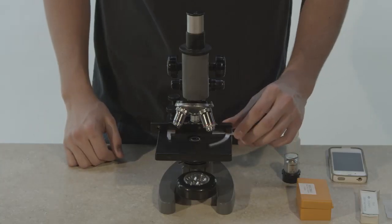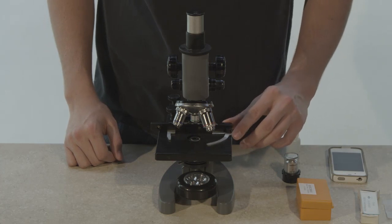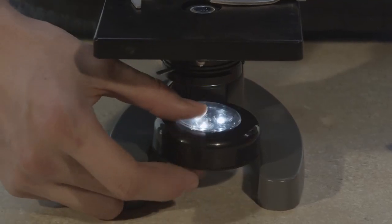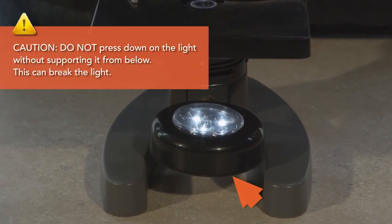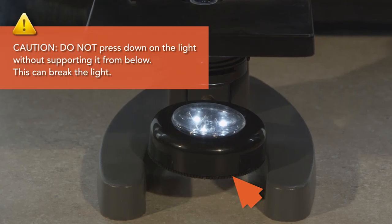The clamp shown is crucial for both holding slides in place and allowing them to be removed. Our microscopes have a touch light that you must press down on to activate. Be careful not to simply press down on the light without supporting it from below. This could break the light.